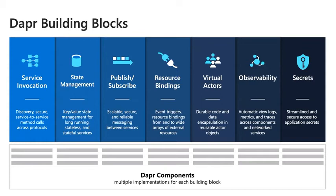Going deeper into the building blocks — these blocks are independent; there's no dependency between each one. Service-to-service invocation is basically a reverse proxy API for communication between multiple services within your application. If you're building microservices, Dapr lets you dynamically discover those services and connect to them. Another common building block is state management: think of a durable key-value object store like S3 or GCS, giving you put and get verb capabilities that let you query by state with a very consistent API.